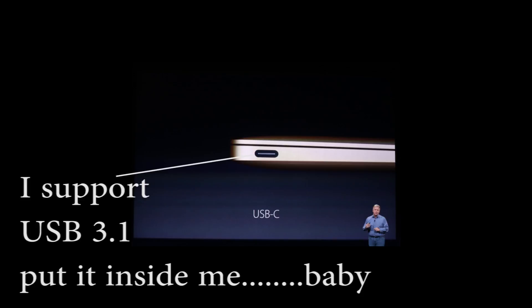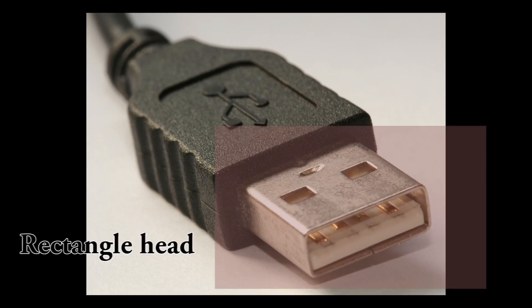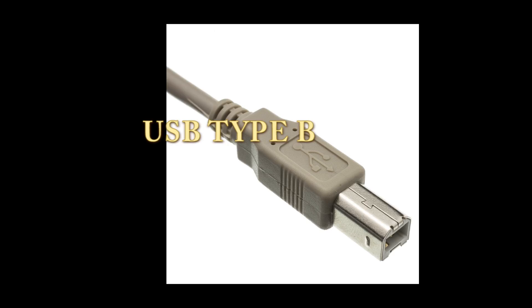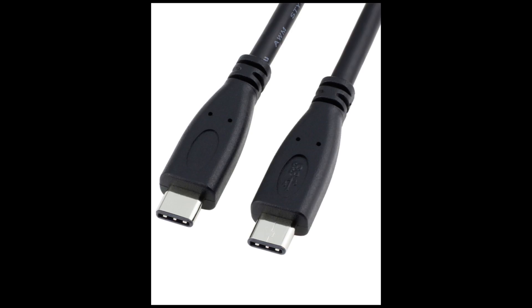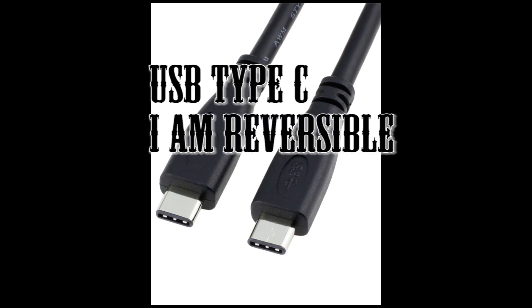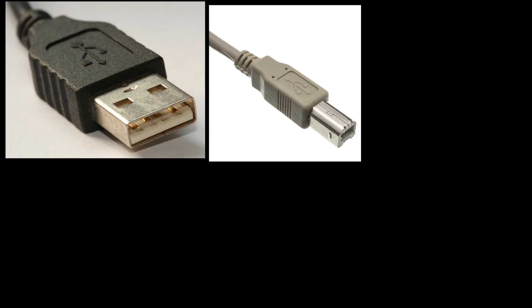To clarify further: we have the standard USB Type-A, which is the standard rectangular head. Then we have USB Type-B, which is the squarish bulky head usually used in printers. And then of course we have the latest one, USB Type-C. There are some in between like Micro-A and B and Mini-A and B, but we won't get into that in this video. The actual names of these adapter heads are called by their types — Type-A, Type-B, and Type-C — and the same thing goes for the female ports.